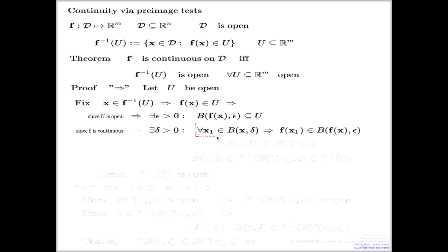If I just condense this into this line, which says the image of the delta ball around x goes into the epsilon ball around f of x. And if I now reinterpret this in terms of the preimage, that will be exactly this.